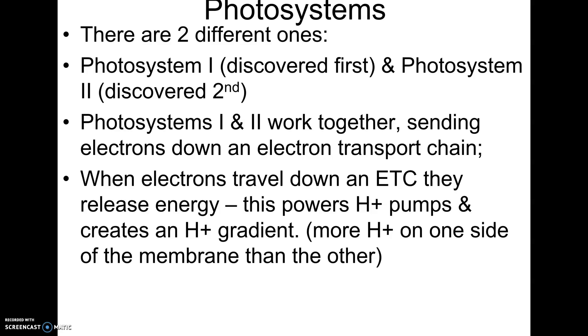So photosystem 1 and photosystem 2, they're named from their discovery. Photosystem 1 was discovered first, and photosystem 2 is discovered second. They work together. They send electrons down electron transport chains. And as they travel down that chain, they release energy. And the energy powers hydrogen pumps, hydrogen ion pumps. And you remember this from our last chapter.